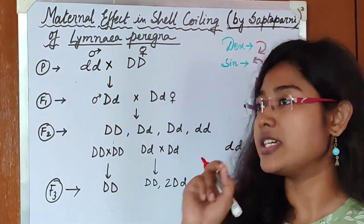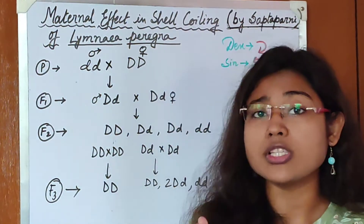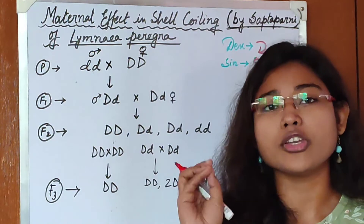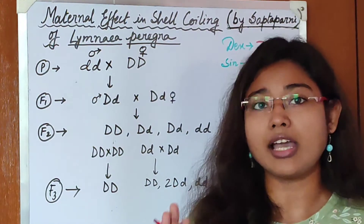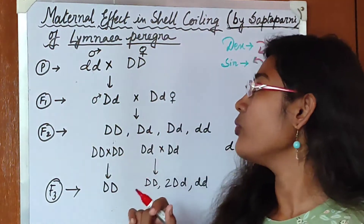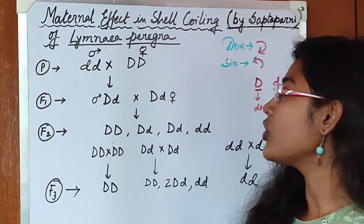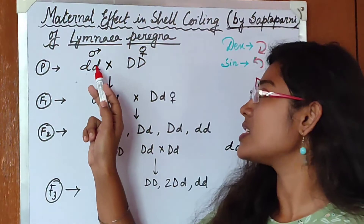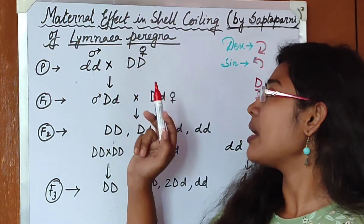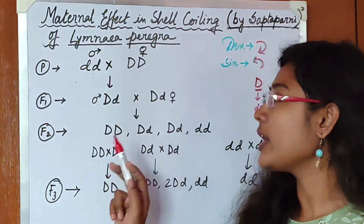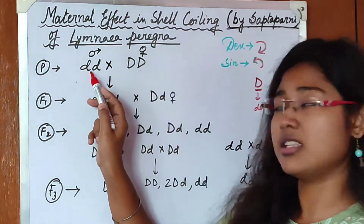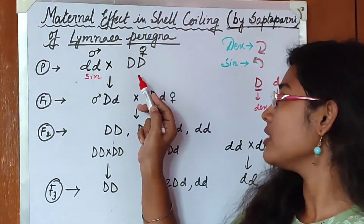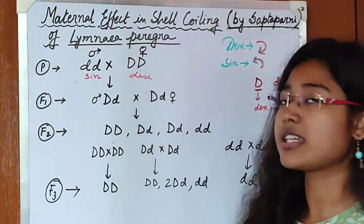The main point is: the phenotype of the progeny is determined by the genotype of its mother. Let us see this with some crosses. In cross 1, we are crossing a homozygous recessive male (small d, small d) with a homozygous dominant female (capital D, capital D). The male is sinistral because it has small d small d, and the female is dextral because it has capital D capital D.